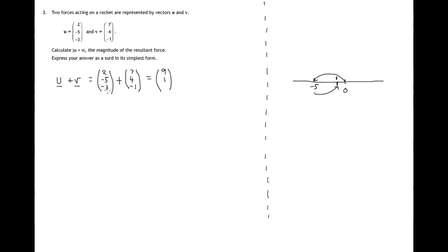The z components: negative 3 plus another negative 1. On the number line, negative 3 and another negative 1 would end up at negative 4.